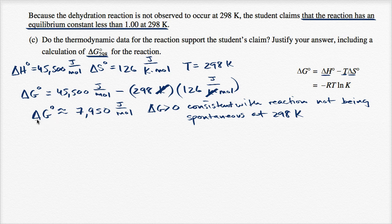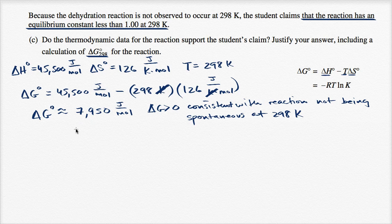For more detail on Gibbs free energy, the Khan Academy videos go into depth. One way to think about it: if Gibbs free energy increases over the course of the reaction, the products have more energy to do work, meaning you have to put work in for the reaction to proceed. If delta G is negative, the products have less energy than reactants, so the reaction can release energy and be spontaneous. Here, delta G is greater than zero, so it's not spontaneous. But we still need to validate the claim that K is less than one at 298 Kelvin.